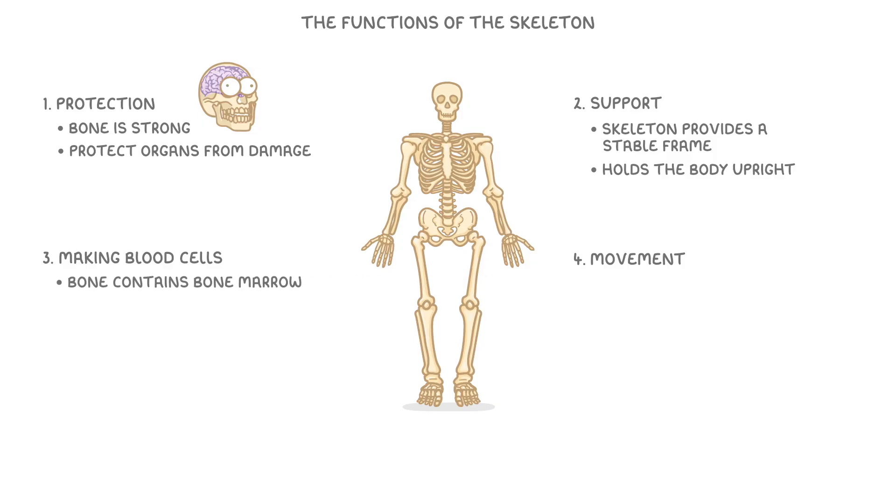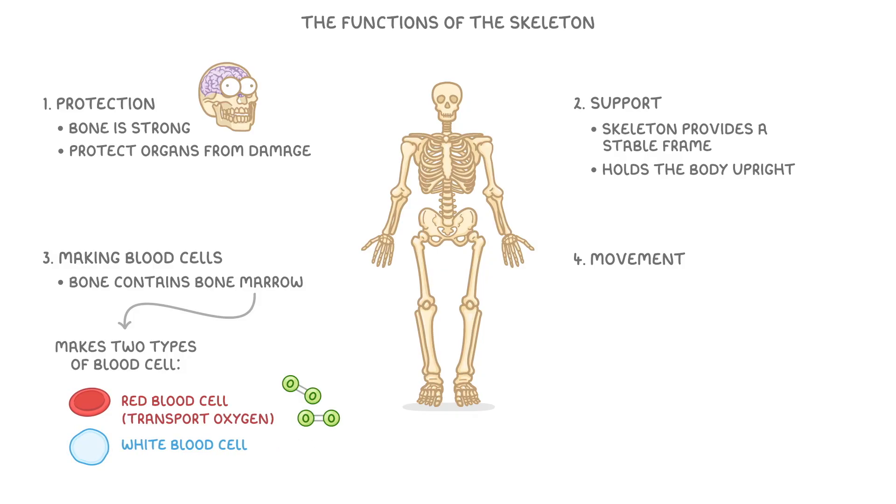Now we mentioned earlier that the inner layer of a bone contains bone marrow. This is important because bone marrow makes two main types of blood cells that it releases into the bloodstream: red blood cells which transport oxygen around the body, and white blood cells which help to protect us from infection.